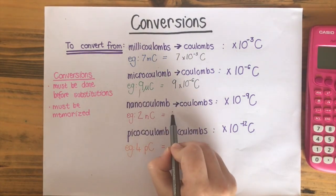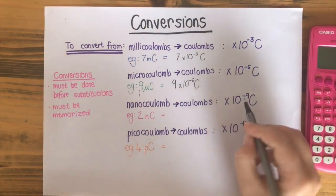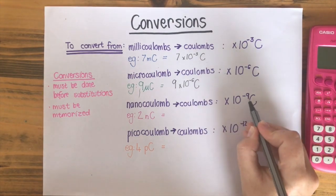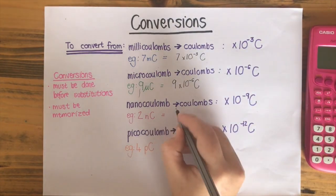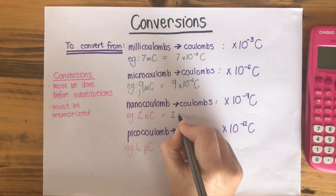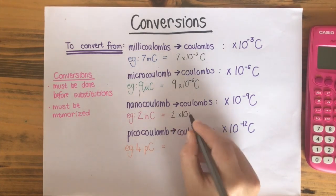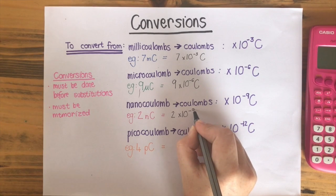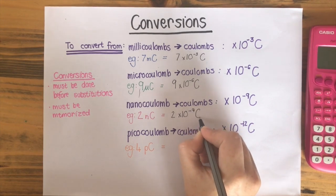For nanocoulombs to coulombs, the conversion is times 10 to the power of minus 9. So we would write down 2 times 10 to the power of minus 9 coulombs.